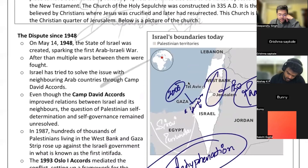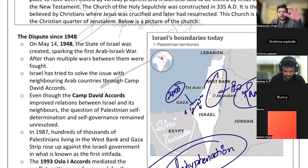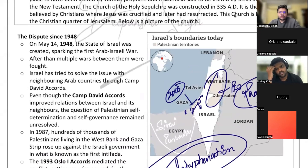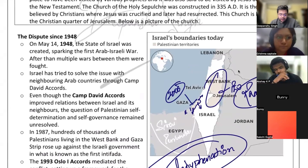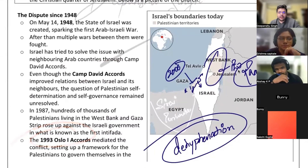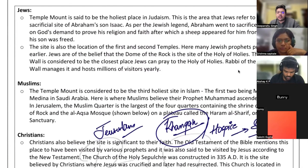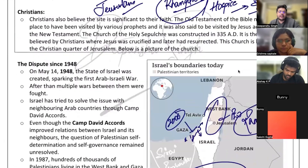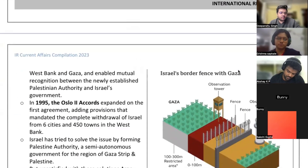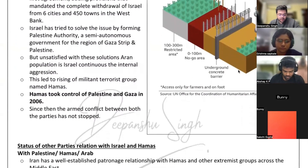Regarding agreements related to Israel-Palestine: the Camp David Accord, and Oslo Accords — Oslo 1 and Oslo 2 — are all related to this issue. The Balfour Declaration was a secret document. Oslo 2 was in 1995, and in 2006 Hamas took control of the Palestinian side of Gaza, after which conflict escalated.